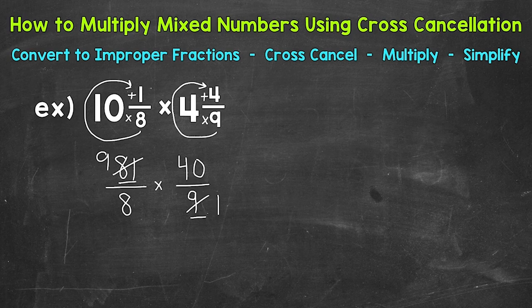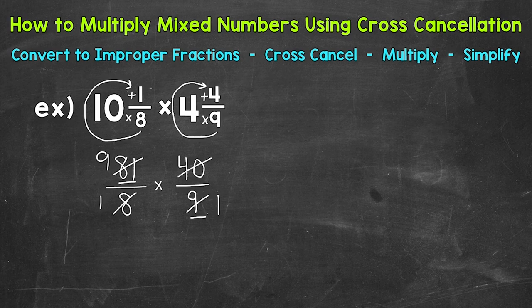We can also look the other way diagonally — between 8 and 40, do we have any common factors? Yes. The greatest common factor between 8 and 40 is 8. So let's divide them both by 8. 8 divided by 8 gives us 1, and 40 divided by 8 is 5.